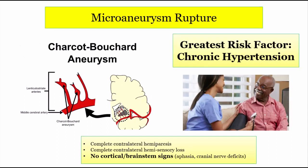Why do these small aneurysms develop? Just like lacunar strokes, it's long-standing high blood pressure that weakens the walls of these small vessels, causing these balloon-like dilations — which are ticking time bombs for rupture under high arterial pressure. Treat your patient's hypertension aggressively; they might thank you later.